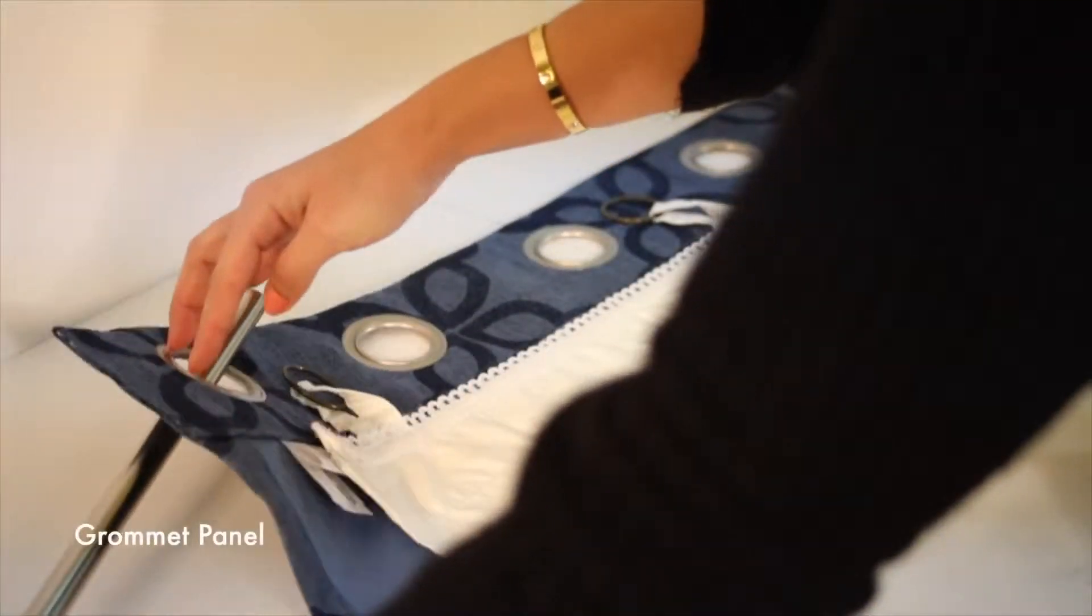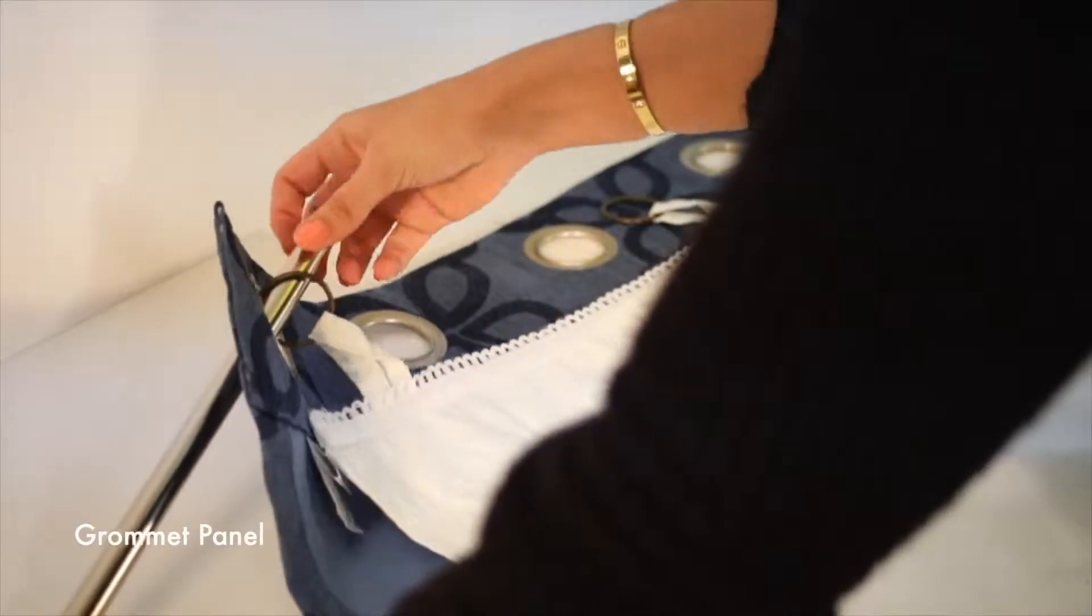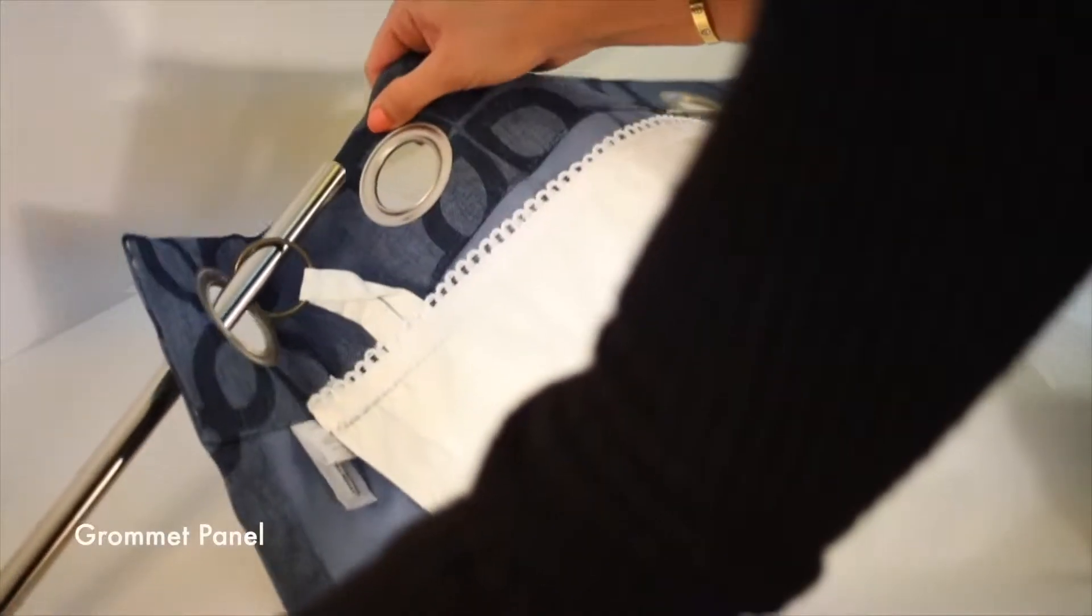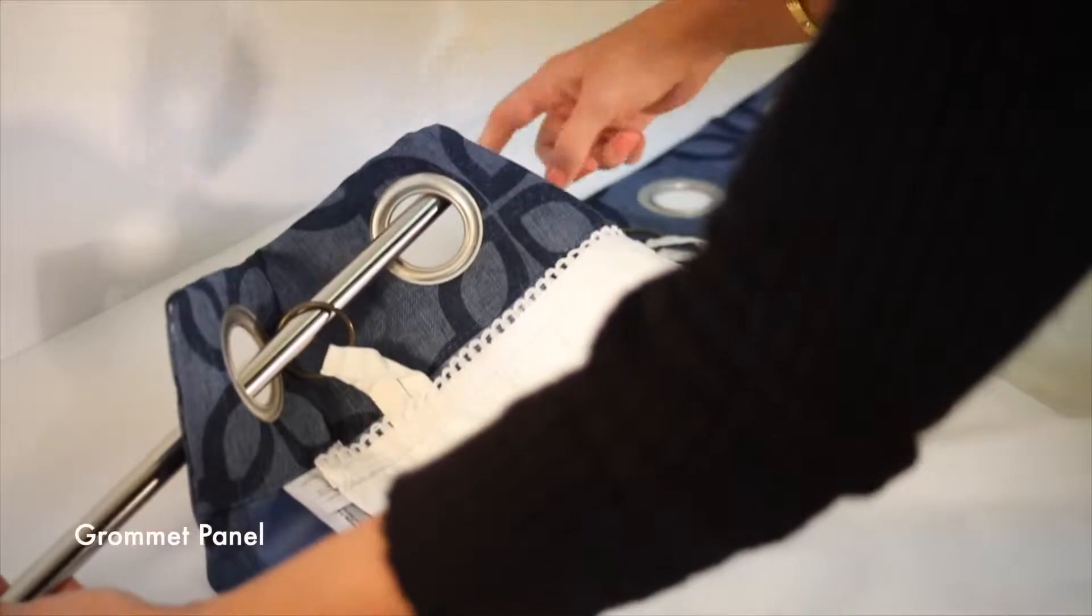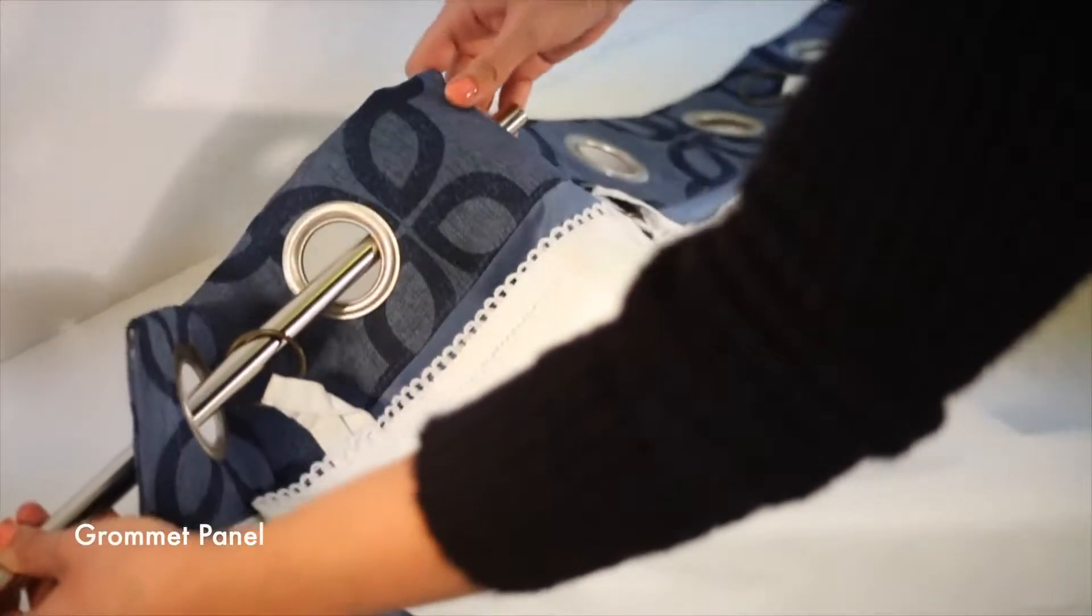To install it behind a grommet panel, simply intertwine each ring with the grommets on the same curtain rod. So easy!